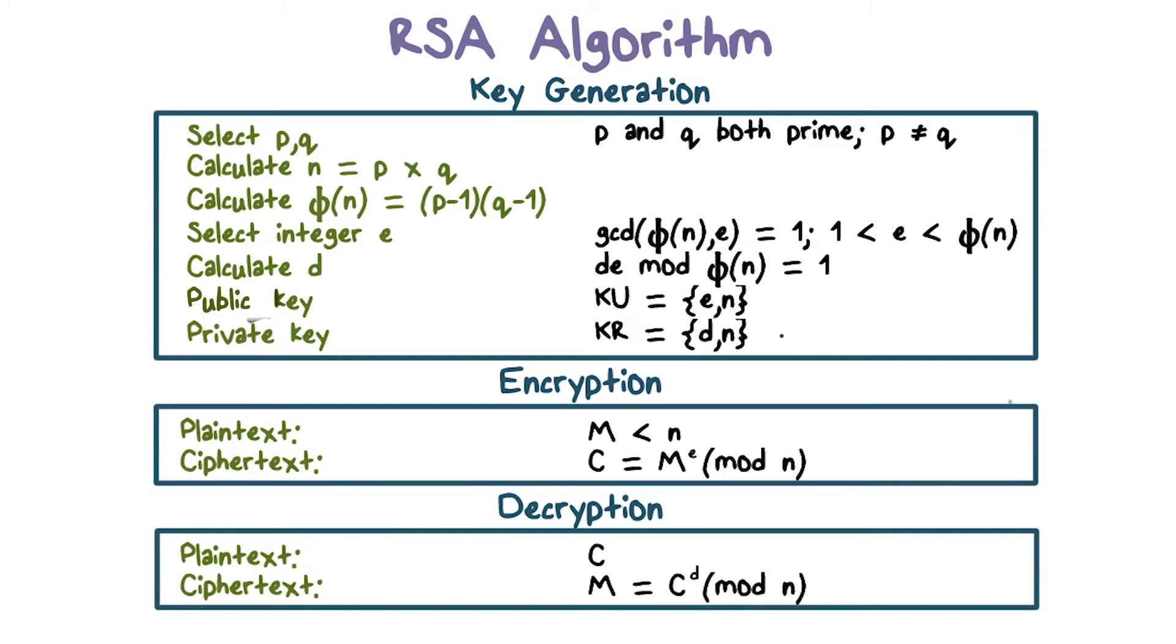Now for encryption, suppose Alice has published her public key and Bob wishes to send a message m to Alice. He wants only Alice to be able to read m. So Bob obtains Alice's public key, and to encrypt message m, Bob computes m raised to the power of e mod n.